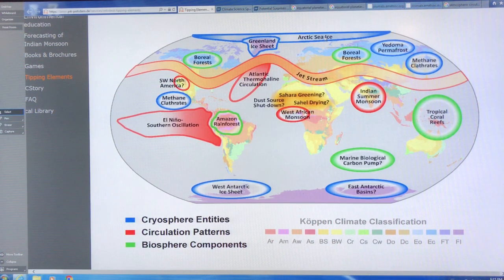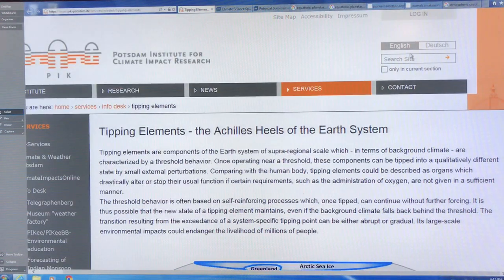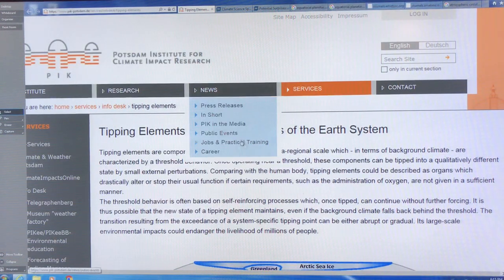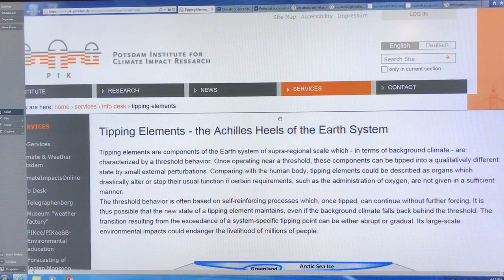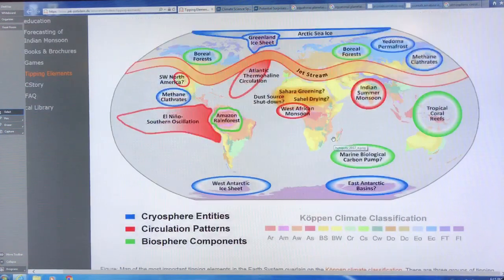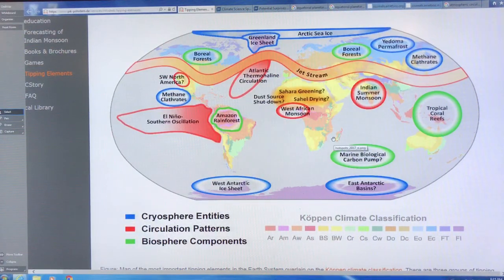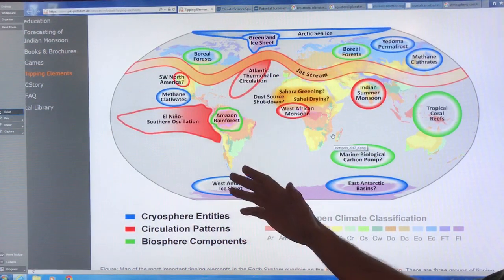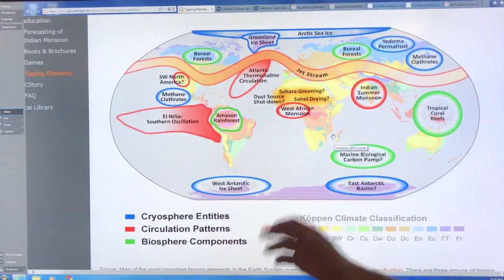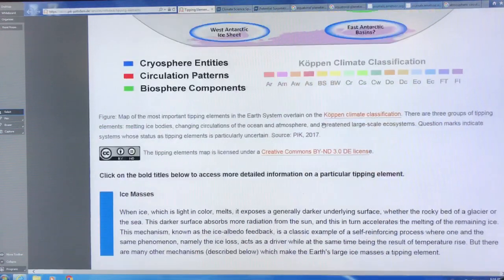This is from the Potsdam Institute. If you go to the Potsdam Institute, look up tipping element, Google tipping elements, the Achilles heels of the earth system, and it explains all of these tipping elements. Some of them can be self-reinforcing, or compound, or cascading. One thing happens, triggering another feedback, and another feedback, and we're at great risk of crossing these tipping points.